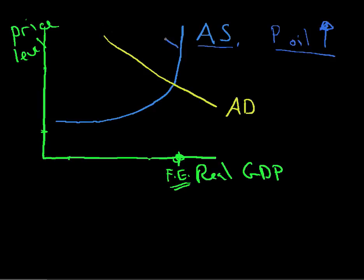And in this case, when resource prices go up, it becomes more costly to produce stuff. And we're going to shift the aggregate supply line to the left like this. So we get this new one over here.